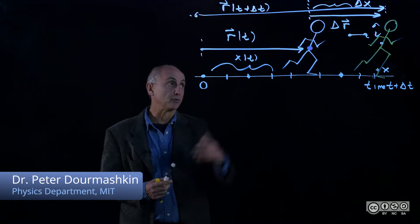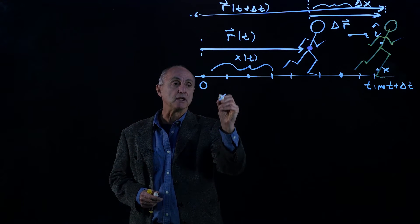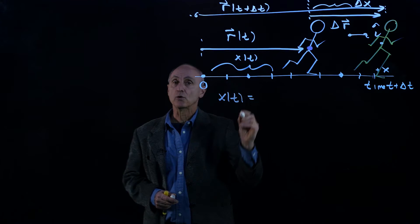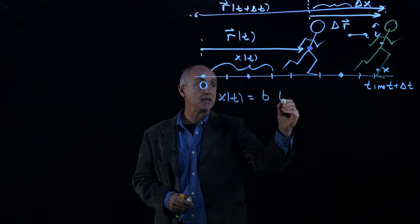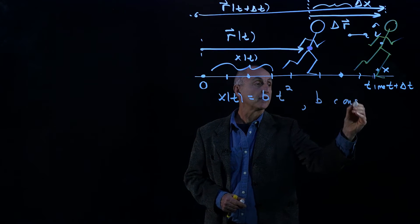Let's consider a very simple example of a runner in which our position function, x(t), is given as a quadratic function in time. It will be a constant, b times t squared. Here, b is a constant.